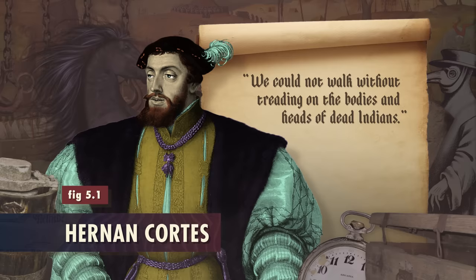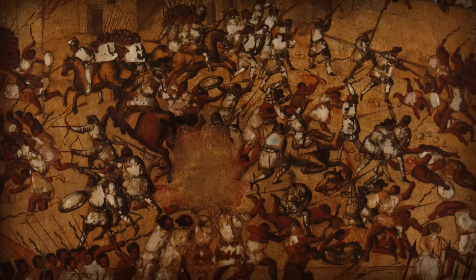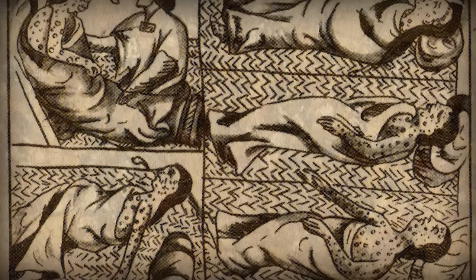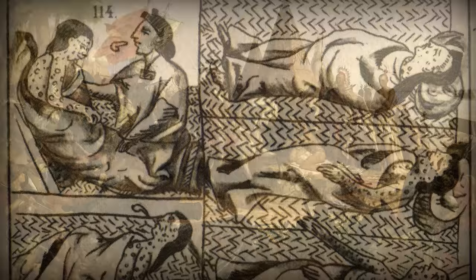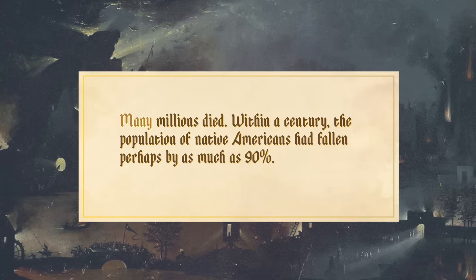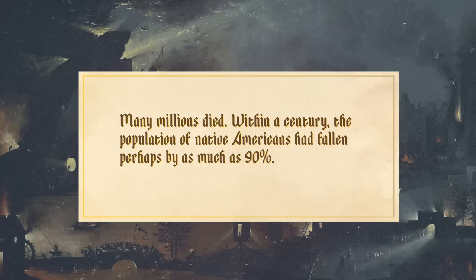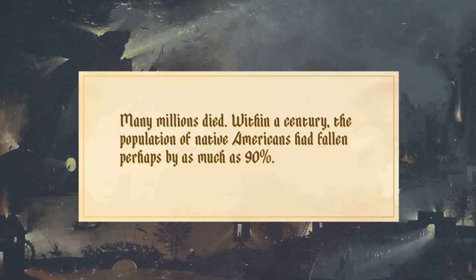Destruction from Iberian expansion was truly extraordinary across the 16th century. As Hernán Cortés commented, "we could not walk without treading on the bodies and heads of dead Indians." Besides the slaughter of empire building directly inflicted by the invaders and their local allies, the ongoing progress of smallpox, measles, and other diseases that Europeans brought to the Americas completely overwhelmed the healthcare systems of Native Americans. Many millions died. Within a century, the population of Native Americans had fallen by perhaps as much as 90 percent.